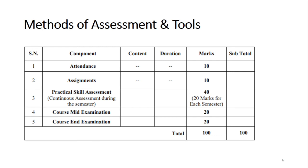Regarding methods and assessment tools: attendance marks will be 10, assignment marks are 10, and practical skills will be assessed each semester — 20 marks per semester, totaling 40 across 2 semesters. There will be a course mid-examination at the end of semester 3 worth 20 marks, and a course end examination at the end of semester 4 worth 20 marks, making total marks 100. In your mark sheet, only grades such as Good, Very Good, or Excellent will be reflected — numerical marks will not appear, and this is applicable to all COCs.